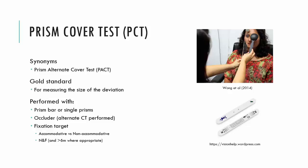Now, to perform the test, you'll require obviously a Prism Bar. You can also use single prisms if you wish. And you'll need an occluder, and you'll ask the patient to fix on a target. It is best that you ask your patient to look at an accommodative target. So at near, small font; in the distance, the smallest letters they can see on the chart.